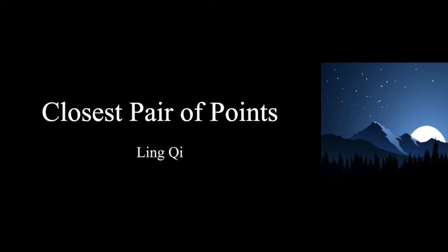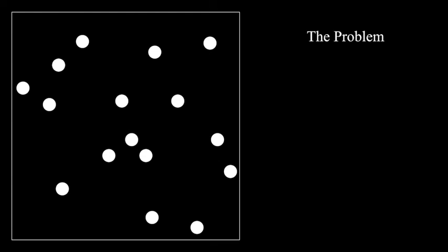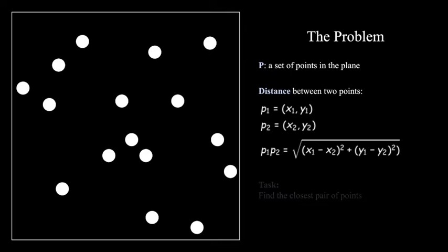Hello, this is Ling presenting the algorithm to find the closest pair of points. Given a set of points P inside a plane, we're trying to find the closest pair of points. And by closest, we mean the Euclidean distance between two points defined by this formula.